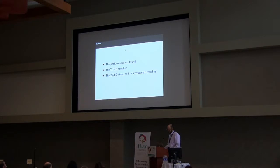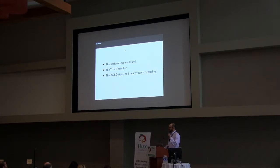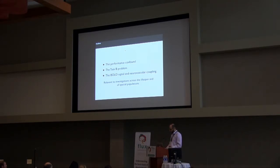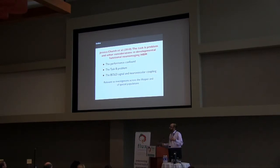So I'm going to talk about three issues: the performance confound, the task B opportunity, and the BOLD signal. I think some of the comments I'm going to make resonate very well with what Russ just said. These comments are in the context of the developmental functional neuroimaging world, but they're really germane to lifespan studies and also to investigations of special populations. This all comes from one of my favorite papers from the lab, written by Jessica Church, Steve Peterson, and myself — a 2010 HBM paper.